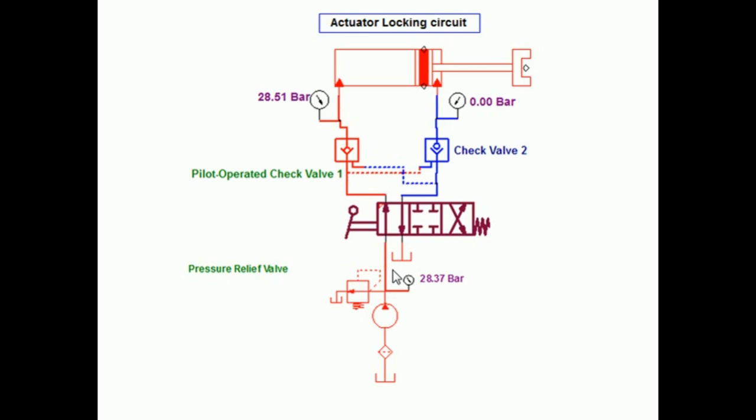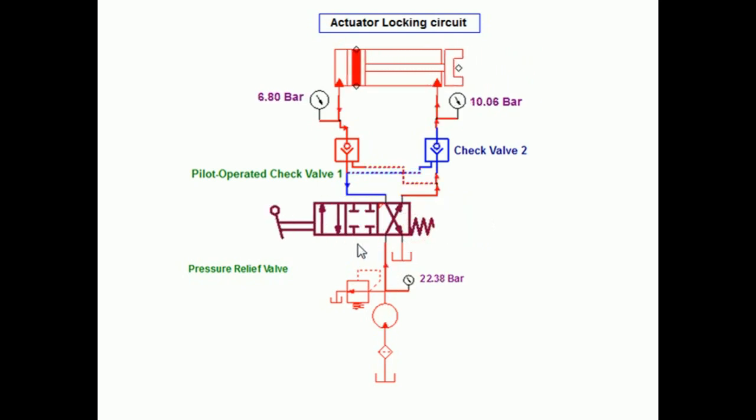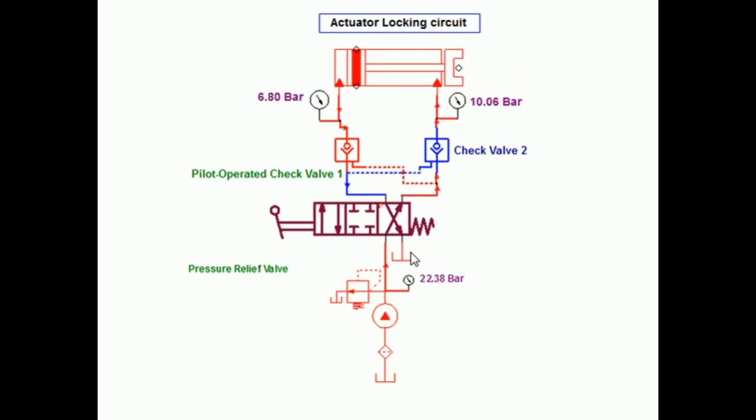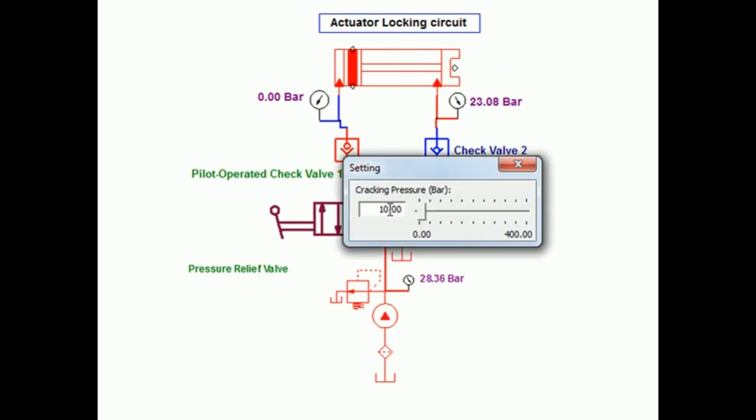Again for the retraction purpose, I need to actuate the third position so that fluid passes from the pump to the rod side end of the cylinder. The check valves get opened because of pilot pressure, and fluid is returned to the reservoir from the blank end of the cylinder.